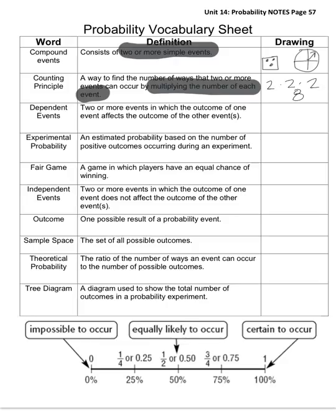Dependent events. Two or more events in which the outcome of one event affects the outcome of another. That'd be like if you had a bag of marbles, and originally you have a red, blue, and black marble.